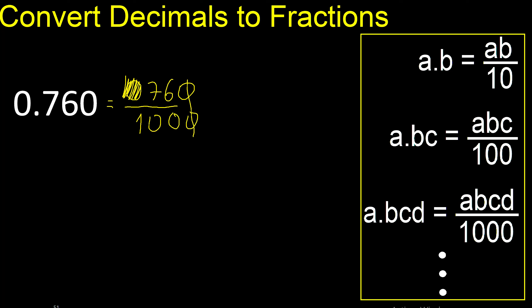The last digit is 0, therefore eliminate. Can be simplified because it can be divided by the same number. Divided by 2, divided by 2.